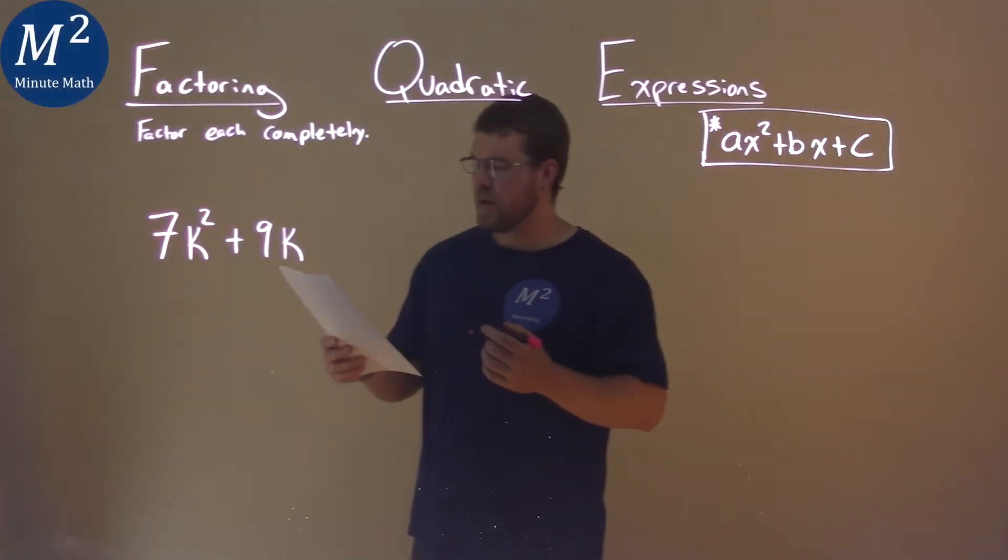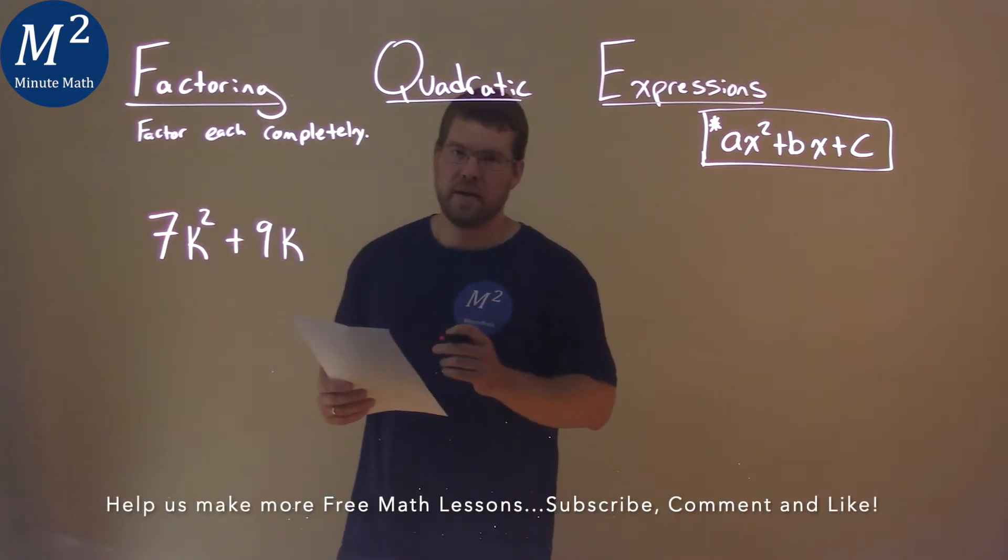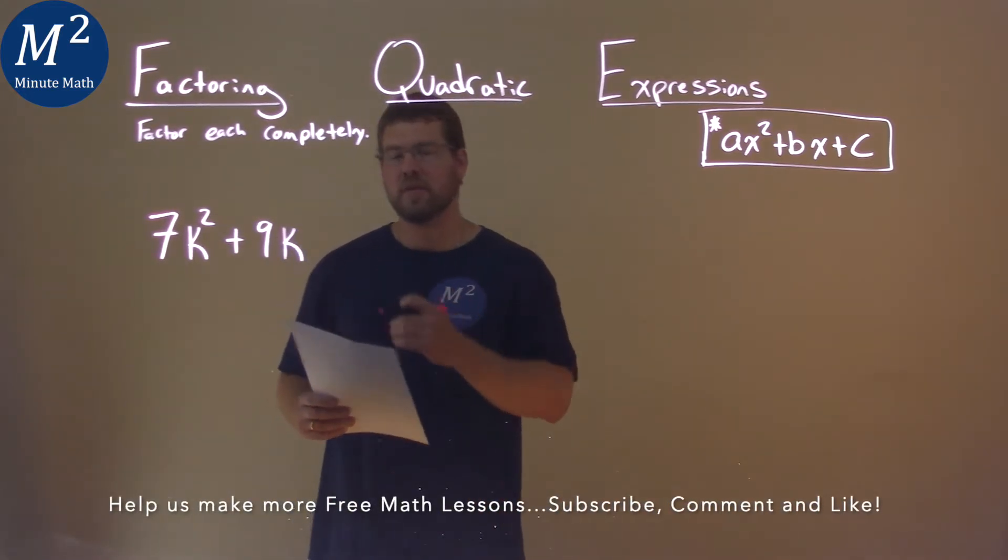We're given this problem right here: 7k squared plus 9k, and we have to factor this completely.